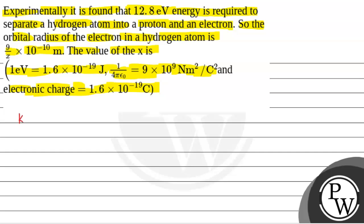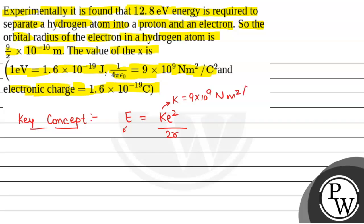We will solve this question. First, we will see what the key concept is. The key concept used to solve this question is the binding energy of an electron in a hydrogen atom, given by E equals K E squared by 2R, where E is the energy of the electron, K is Coulomb's constant equal to 1 by 4 pi epsilon 0 equal to 9 into 10 to the power 9 newton meter square per coulomb square, E is the electronic charge equal to 1.6 into 10 to the power minus 19 coulomb, and R is the radius of the orbit.